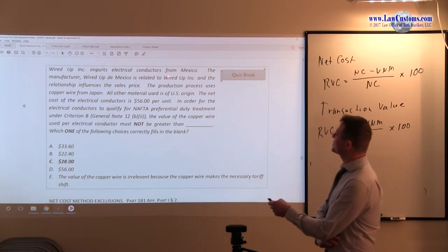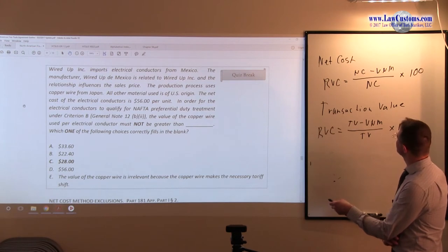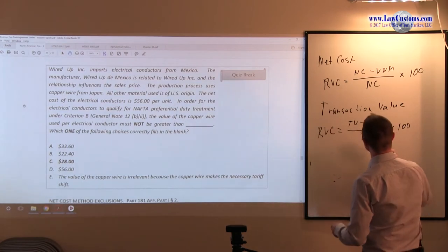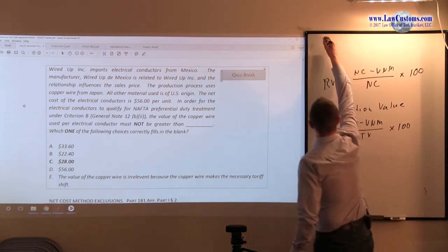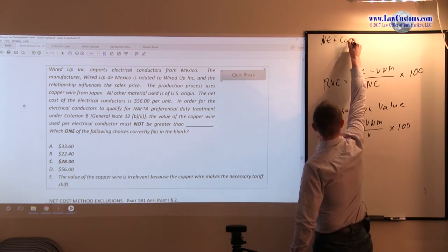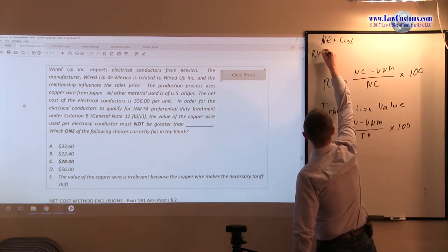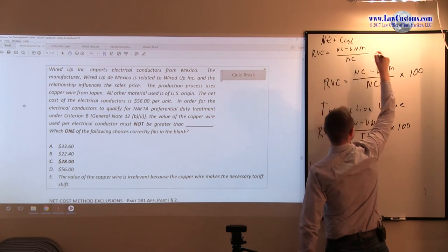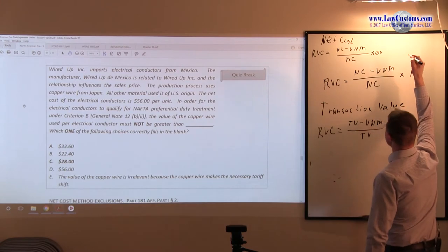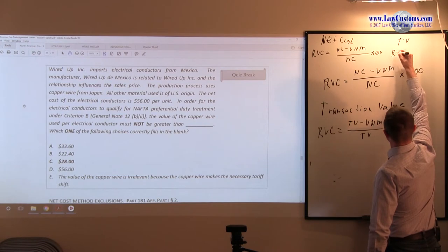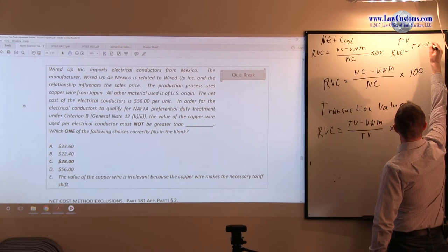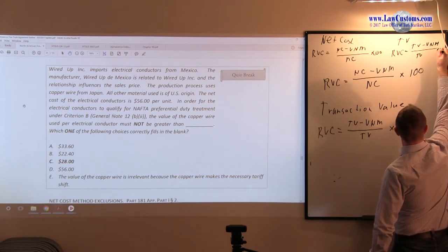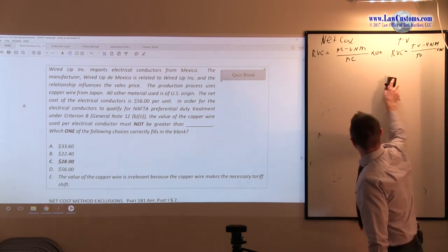Wired Up Incorporated imports electrical conductors from Mexico. Since we're going to be using those formulas, I'm going to rewrite this a little bit to create more space on the board. So net cost would be RVC equals NC minus VNM, value of non-originating material, divided by NC times 100. And transaction value would be RVC equals transaction value minus value of non-originating materials, divided by transaction value times 100. This way I created much more space because we're going to need this.